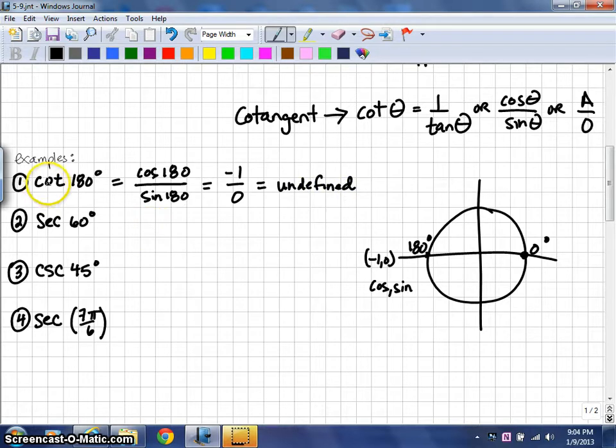Since you can't divide by 0, you would say that that value is undefined. So, sometimes when you're working with a cotangent, you'll get a 0 on the bottom, and therefore you would get an answer of undefined. That does happen occasionally.